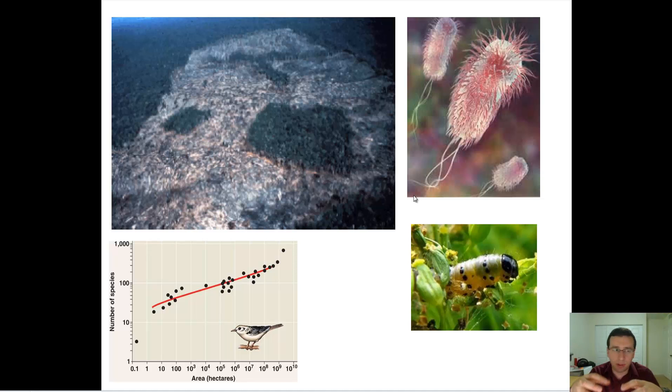And the species which rely on the interior of the ecosystem, not on the edge, can't survive. There's going to be more competition because there's less resources. And a smaller ecosystem can support less species, like we talked about, less producers, less diversity.